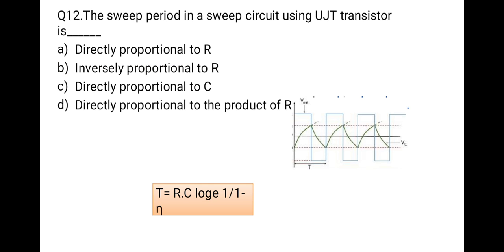The next question: the sweep period in a sweep circuit using a UJT transistor is which of the following? Options: directly proportional to R, inversely proportional to R, directly proportional to C, or directly proportional to the product RC. From the formula T = RC × ln(1 / (1 - η)), the sweep period is directly proportional to the product RC. So the correct option is D.